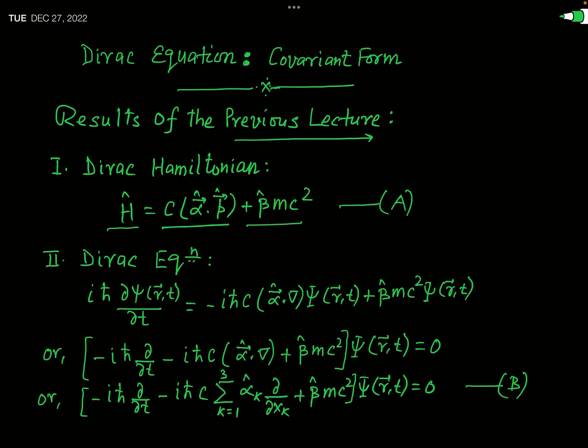By introducing this Hamiltonian, Dirac obtained the relativistic equation. That equation is simply the Schrödinger time-dependent equation in which the Hamiltonian is replaced by this expression — which is called the Dirac Hamiltonian.